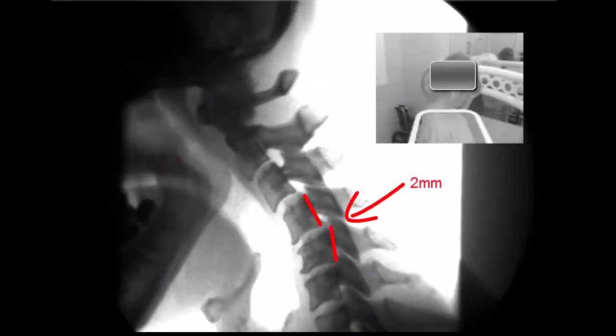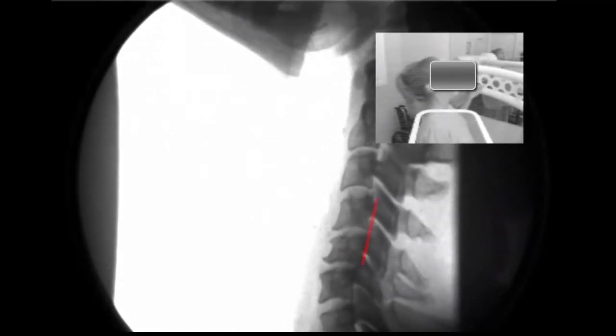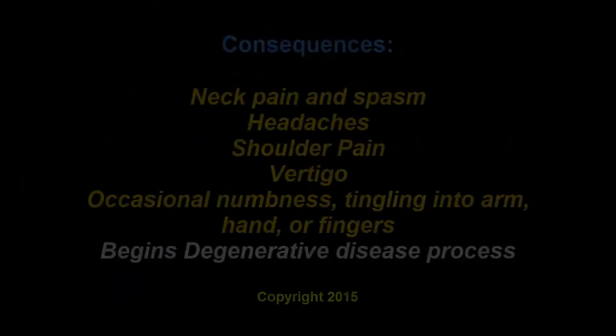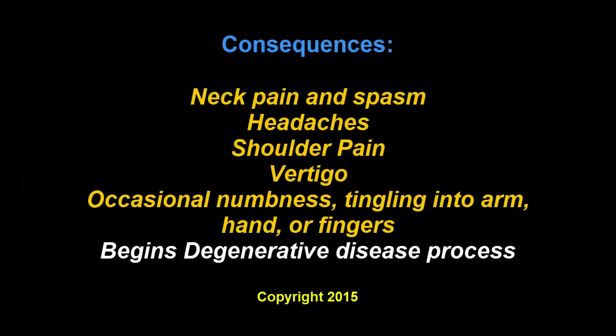So in this patient, you'll see that cervical vertebrae 4 slides forward on cervical vertebrae 5 by 2 millimeters. This is what we refer to as an anterolysthesis. And when she goes into extension, it comes back and they line up. These patients tend to have headaches, neck pain, muscle spasms, vertigo, numbness, tingling into the arms, hands, and fingers, and it begins the degenerative disease process.